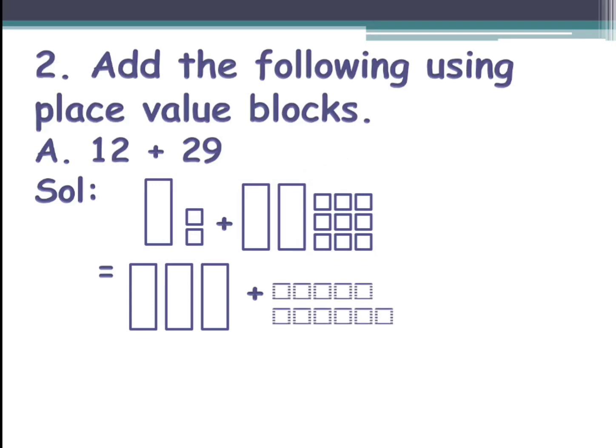But children, we have learned that 10 small squares will make one big rectangle. So here you have 10 small squares which can make one rectangle. If it again has 10, then it becomes two rectangles. If it is less than 10, then we have to write the same number. So here we have 10 small squares.